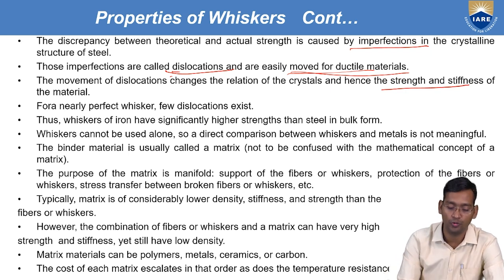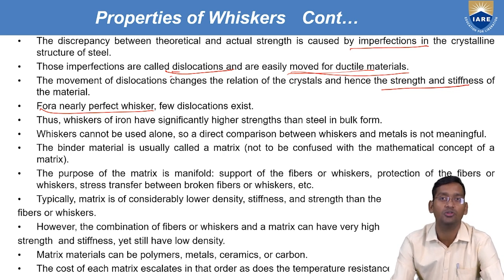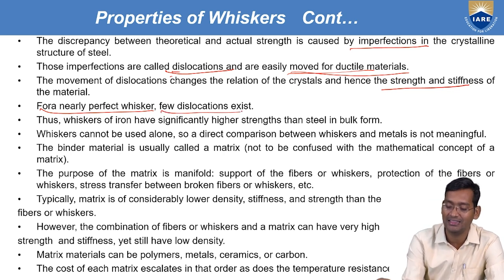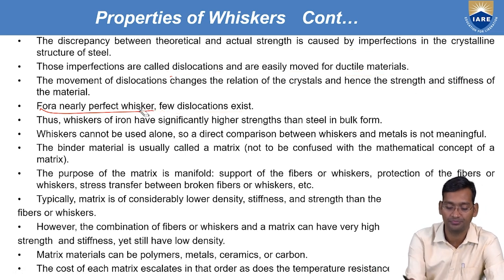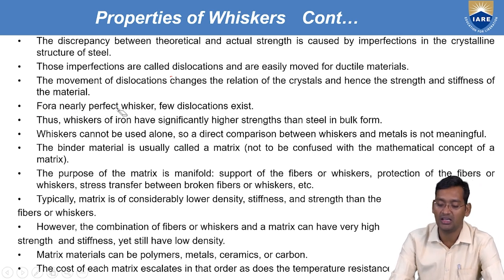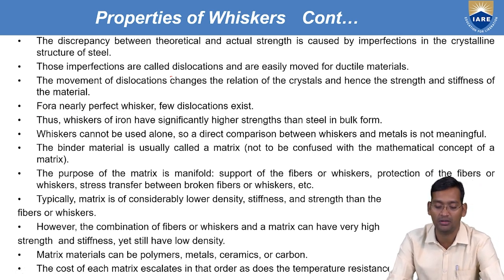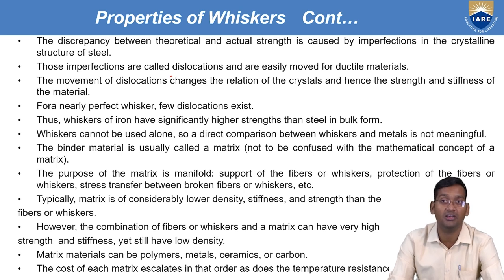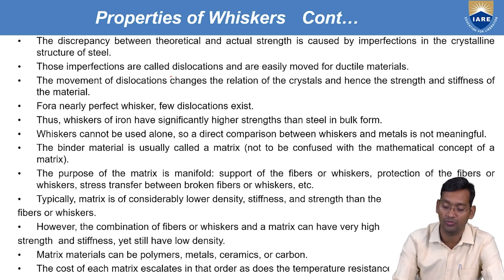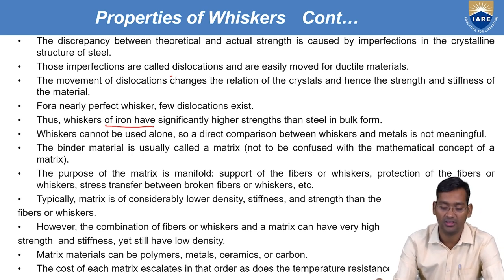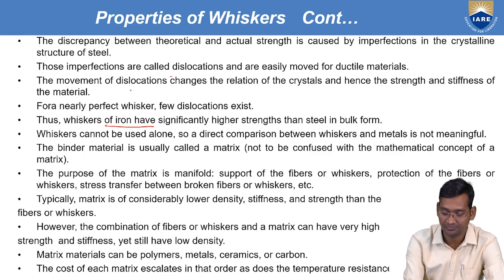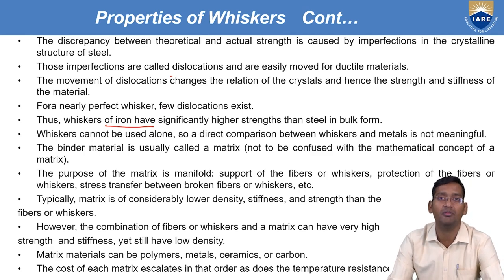For a nearly perfect whisker, there is no or negligible dislocation — very few dislocations exist in the whisker. That's why whiskers are perfectly formed. Thus, whiskers of iron have significantly higher strength than steel in bulk form, because lesser dislocations are there in iron, giving it higher strength compared to steel in bulk form.